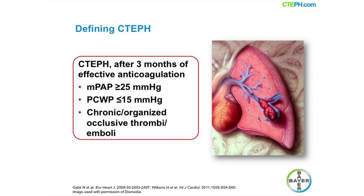First, a quick reminder of what we're talking about when we talk about CTEPH. CTEPH, or Chronic Thromboembolic Pulmonary Hypertension, is defined as a mean pulmonary artery pressure of at least 25 millimeters of mercury and a pulmonary capillary wedge pressure of no more than 15 millimeters of mercury in the presence of multiple chronic or organized occlusive thrombi in the elastic pulmonary arteries after at least three months of effective anticoagulation.